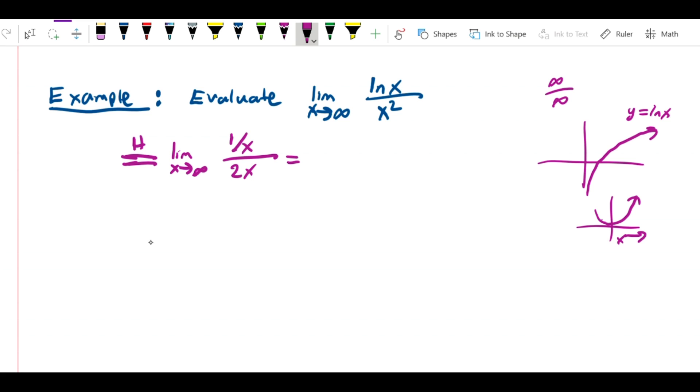This simplifies. First, let me point out something. This is not a L'Hopital's rule form anymore. 1 over infinity is 0, and 2 times infinity is infinity. So this is actually just a 0 over infinity type of limit.